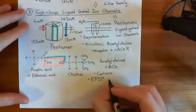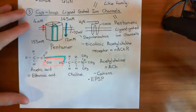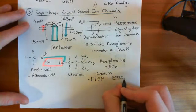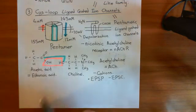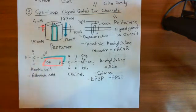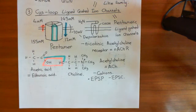People also refer to the net movement of positive charge that these channels allow as an excitatory postsynaptic current. The important thing is that it excites the postsynaptic cell, making it more likely to fire an action potential. We'll continue our discussion of cis-loop ligand-gated ion channels and see other examples in the next video.